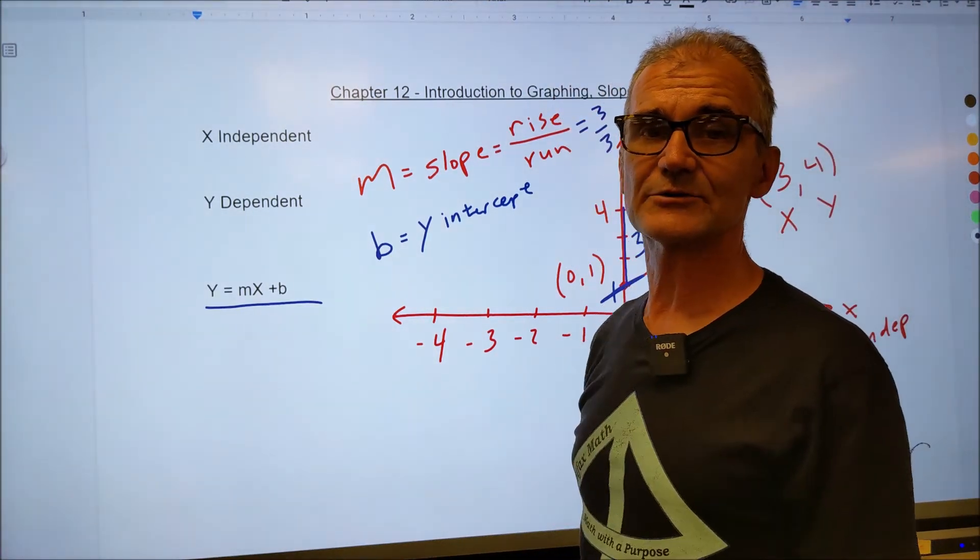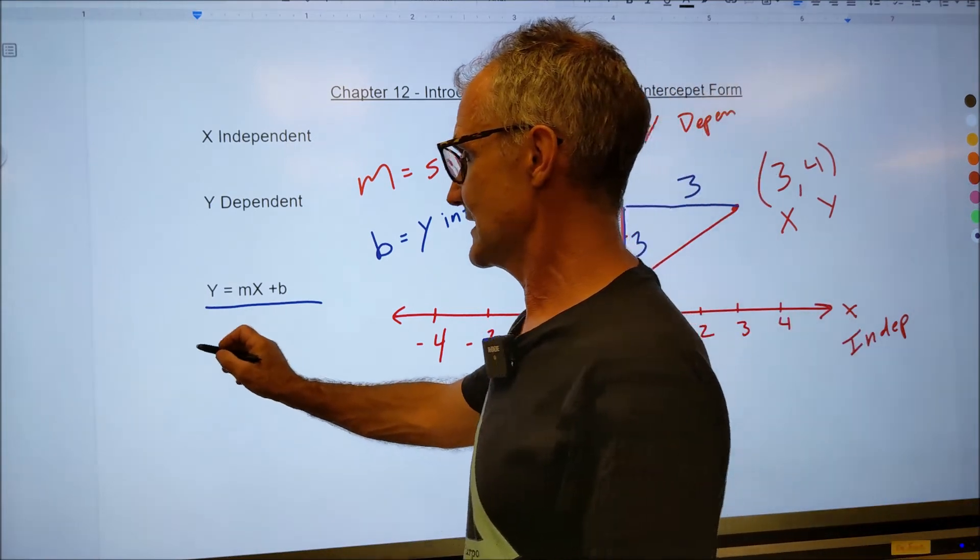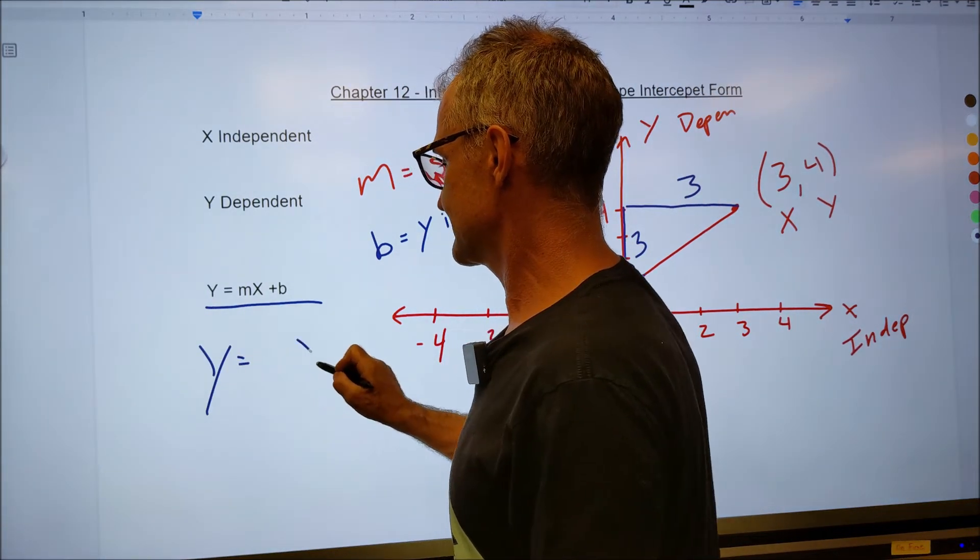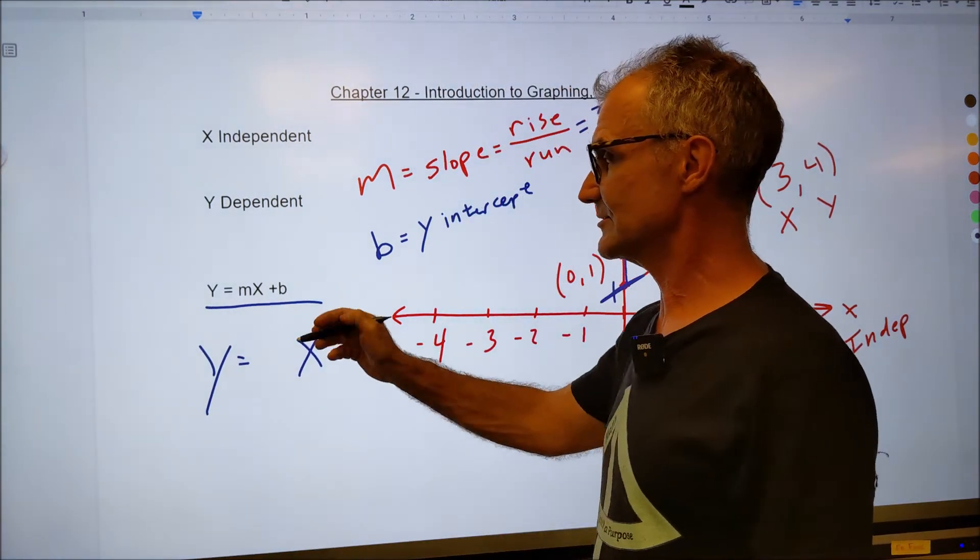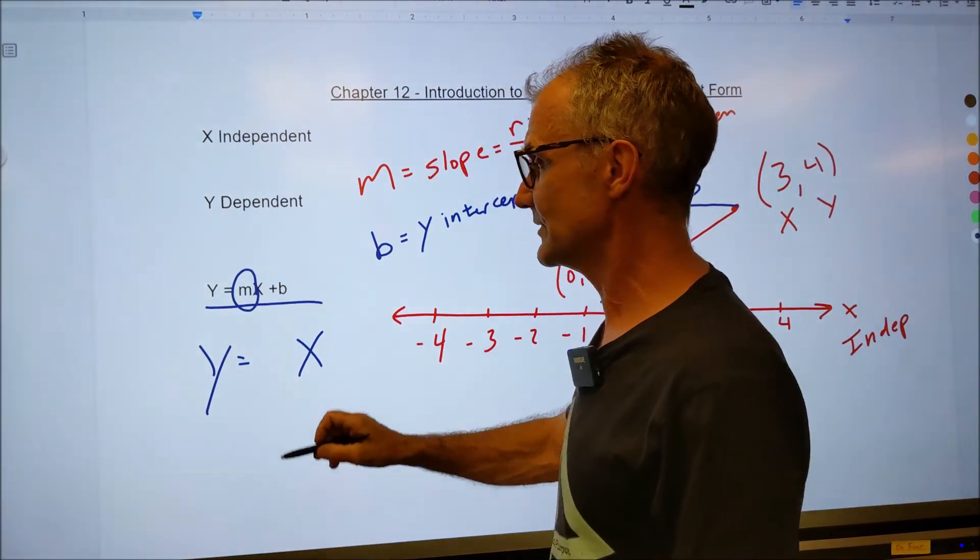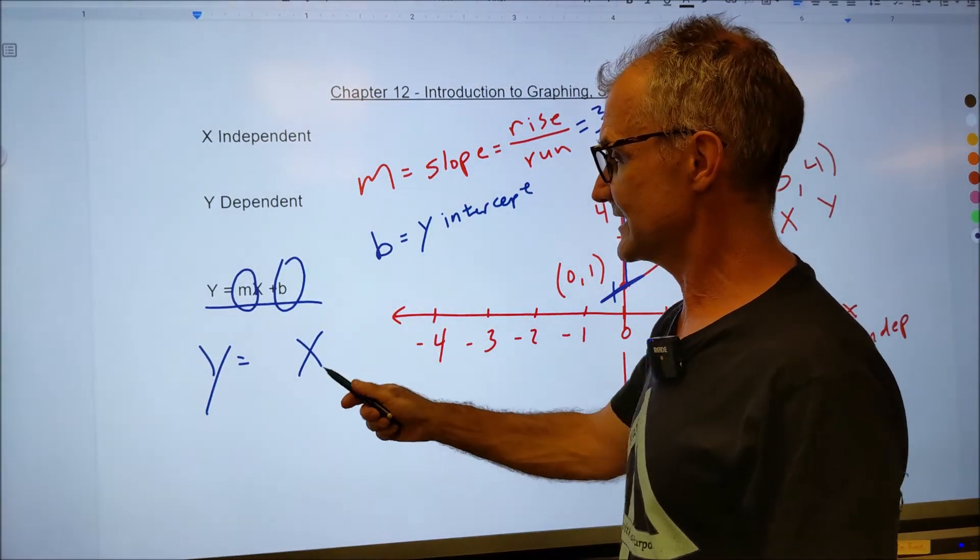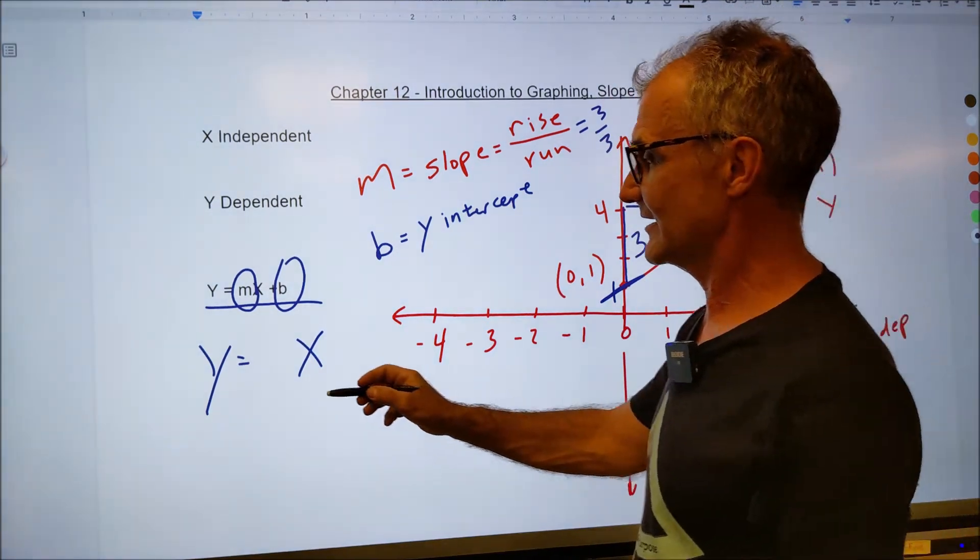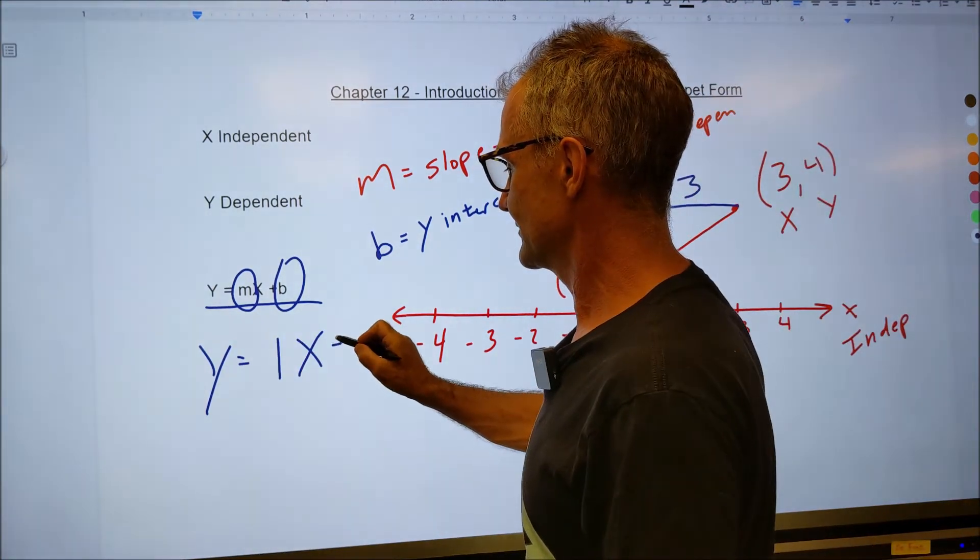The general equation is y equals mx plus b. y and x are going to stay the same. And then you're going to replace the m with the slope and the b with the y-intercept. So in this case, I have y equals 1x plus 1.